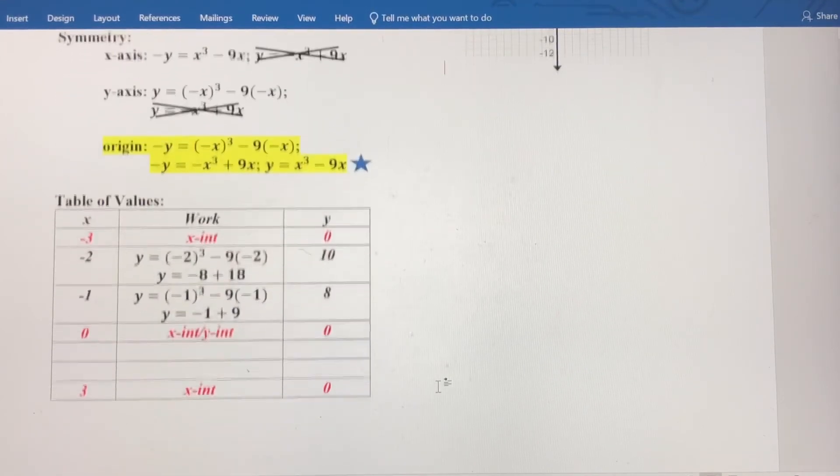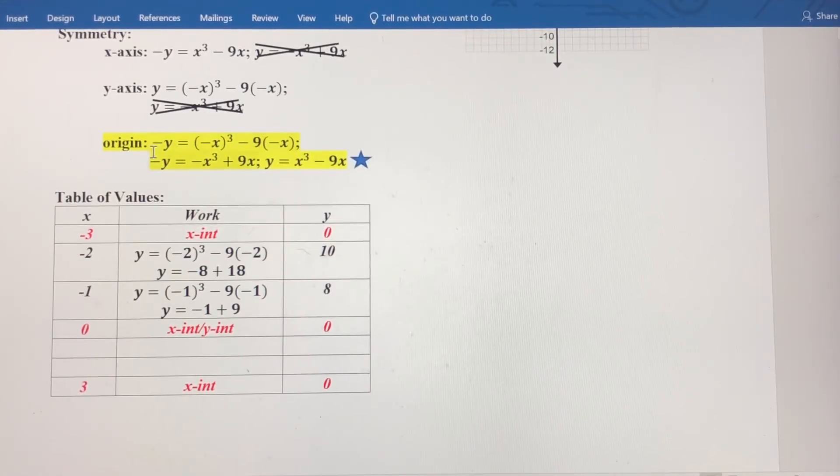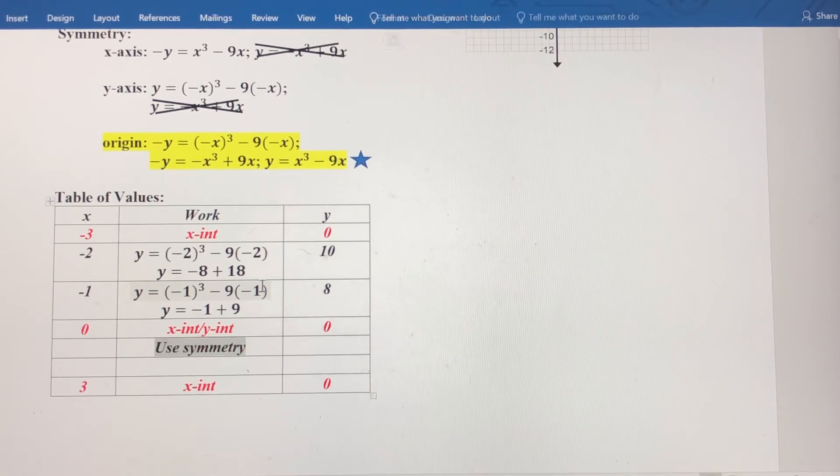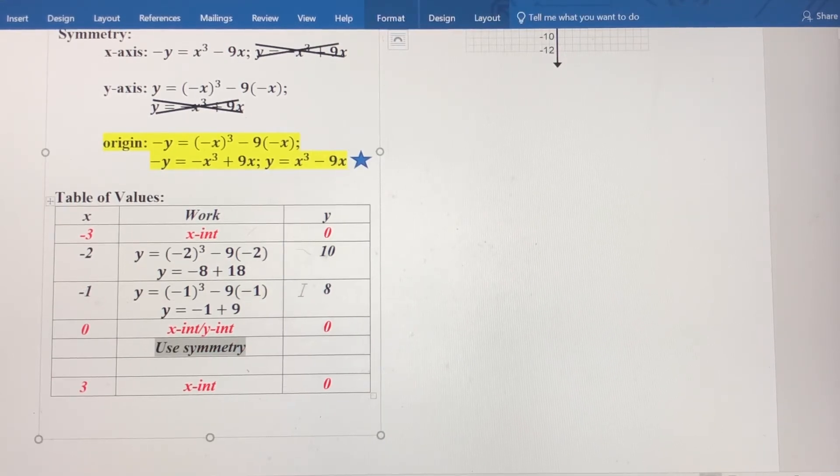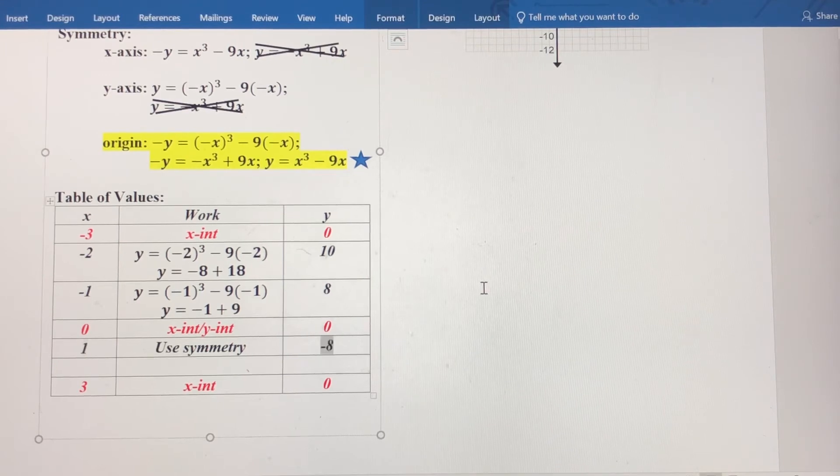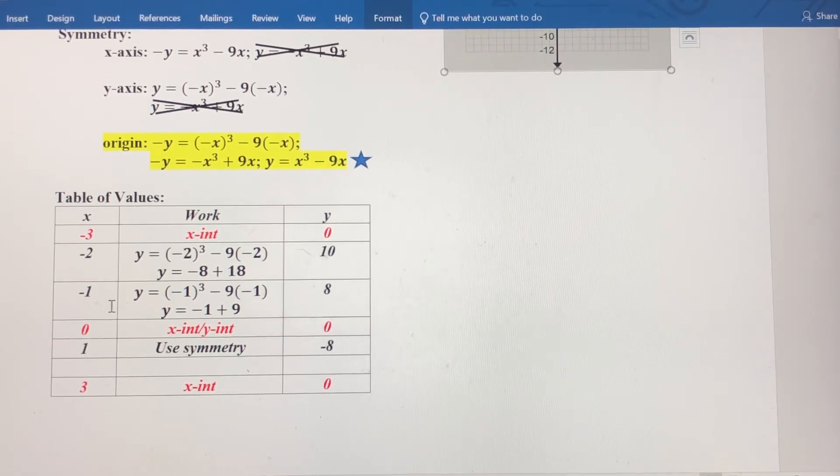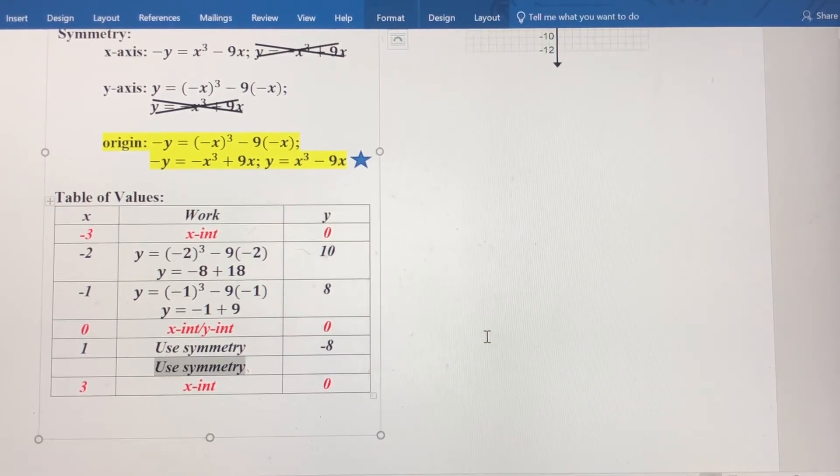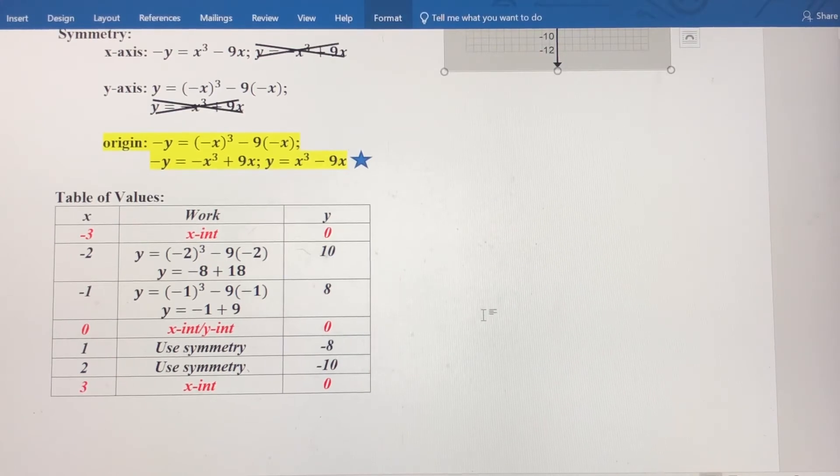Now let's use symmetry here. So remember, origin symmetry means that I can change the signs of both the x and y coordinates, and that point will be on the graph. So if negative 2 comma 10 is on the graph, actually let's go with negative 1 first. If negative 1, 8 is on the graph, then positive 1 and negative 8 will be on the graph. Notice that both the x coordinates and the y coordinates have changed to their opposites. We can do the same thing with negative 2 comma 10 using symmetry. So if negative 2 positive 10 is on the graph of this equation, then positive 2 negative 10 would also have to be on the graph.